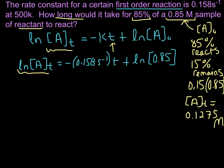is equal to 0.1275 molar. We were given the initial concentration explicitly, and we're waiting for 85% to react, leaving 15%. To figure out what fraction of 0.85 is 15%, we multiply 0.15 times 0.85 to get 0.1275. So that is [A]ₜ.